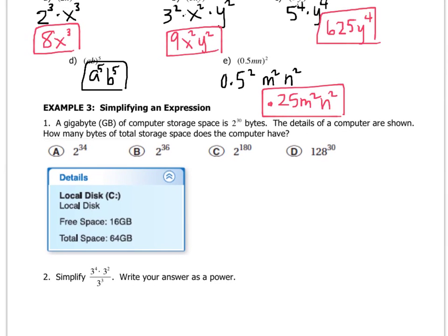All right, let's read example 3. A gigabyte of computer storage space is 2 to the 30th bytes. So 1 gigabyte equals 2 to the 30th bytes. I'm abbreviating right there. All right, the details of a computer are shown. How many bytes of total storage space does the computer have?